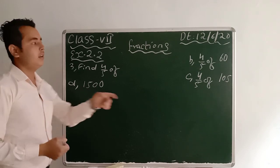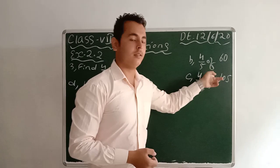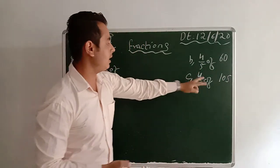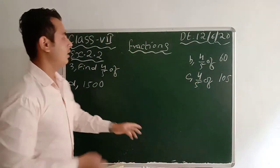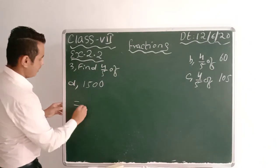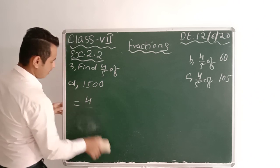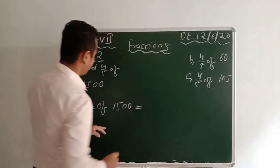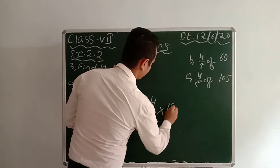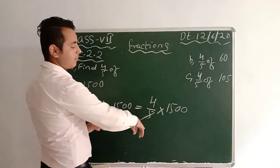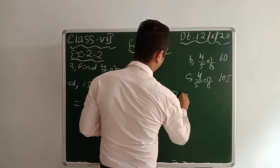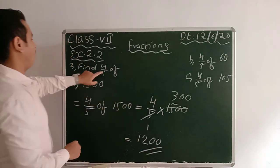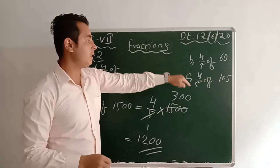Number D is 1500. A I did — B and C you do by yourself the same way: 4/5 of 60 means 4/5 into 60; similarly 4/5 into 105. I am doing D: 4/5 of 1500 gives 4/5 into 1500. Cut 1500 by 5 which gives you 300. Now 300 into 4 equals 1200. So 4/5 of 1500 means 1200. B and C you do as homework.